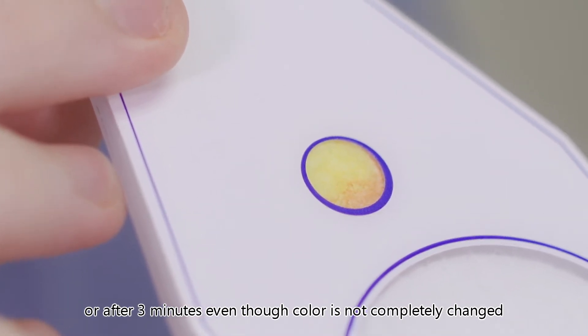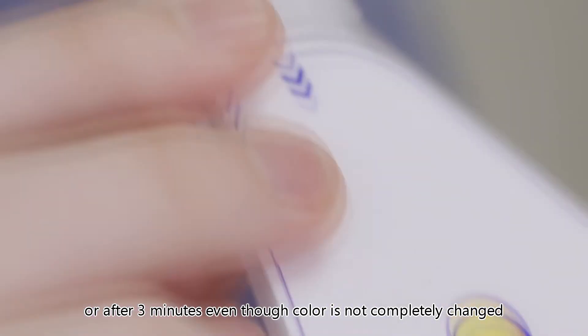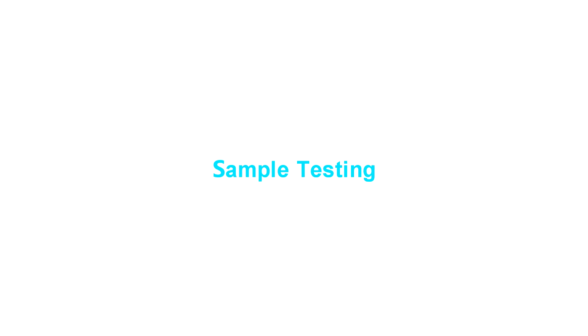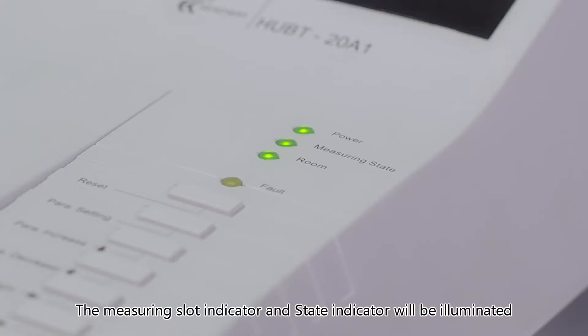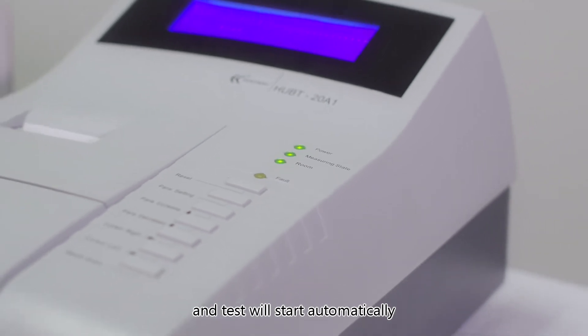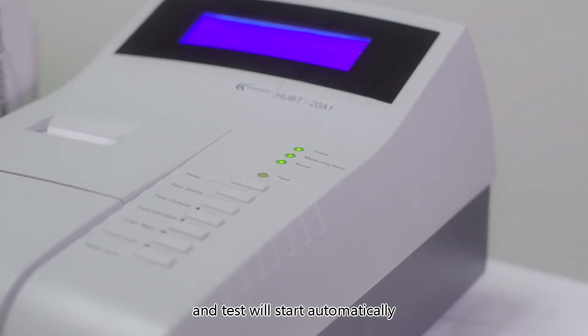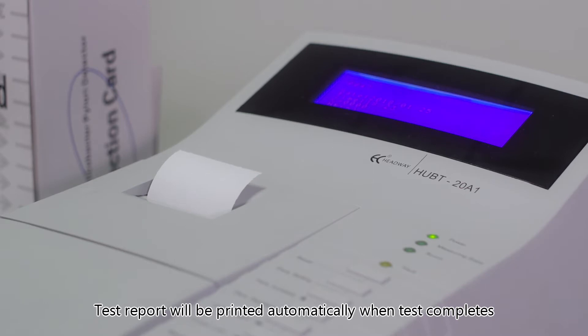Sample testing: Insert the sample card into the measuring slot. The measuring slot indicator and state indicator will be illuminated and the test will start automatically. Test reports will be printed automatically when the test completes.